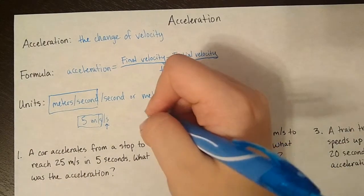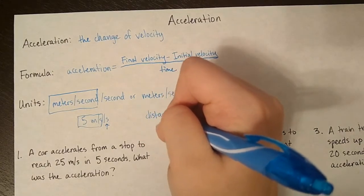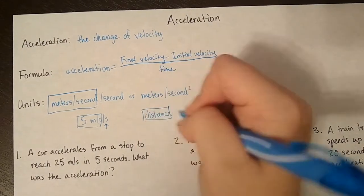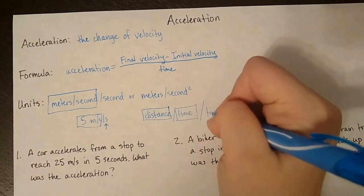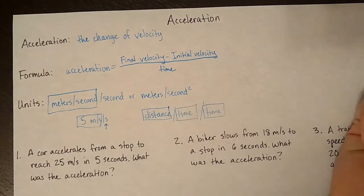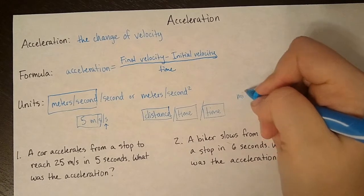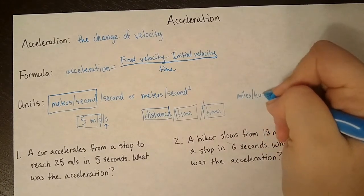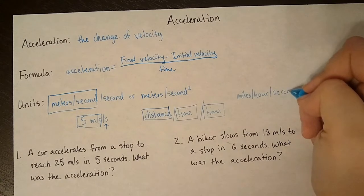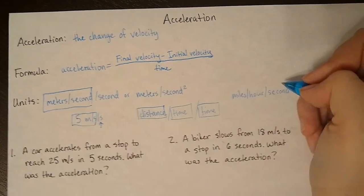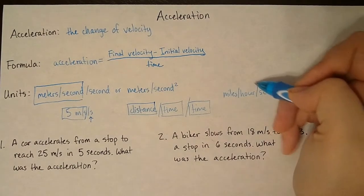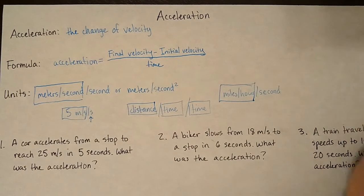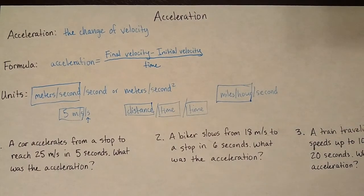Acceleration can be anything that is a distance divided by a time divided by a time. And you know what, the time doesn't have to be the same. You can have something like miles per hour per second. And this is actually a unit that you would probably see pretty commonly if you were measuring the acceleration of a car. We measure a car's velocity, or speed, in miles per hour.